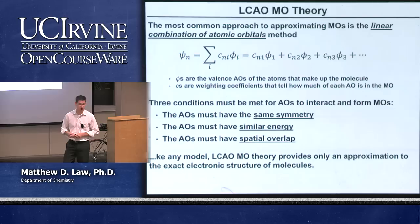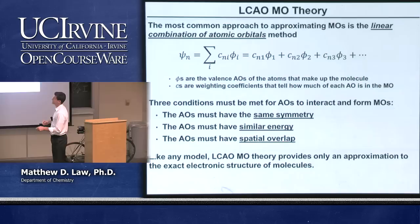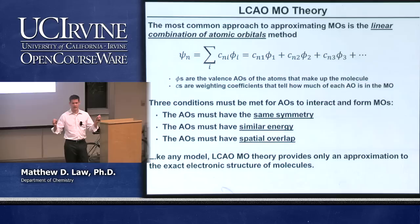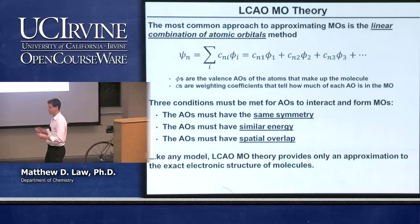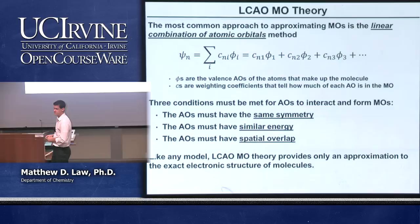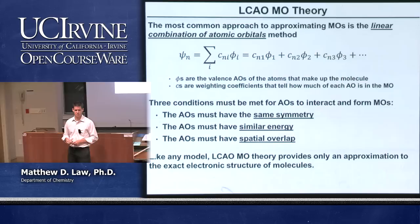Third, the atomic orbitals must have spatial overlap to interact and form molecular orbitals. The atoms have to be close enough to actually interact. If they're not close enough, there's no interaction. The interaction depends on distance in a specific way depending on the particular orbitals involved.